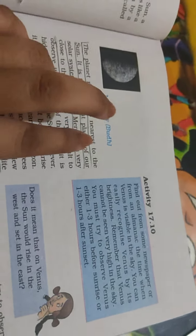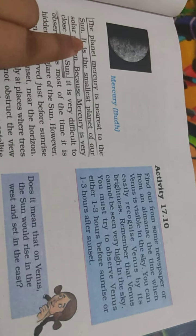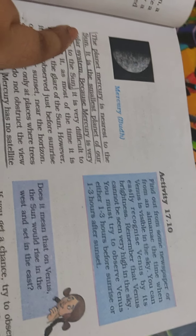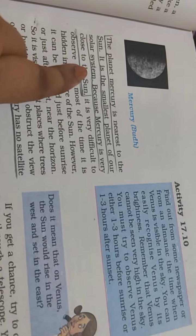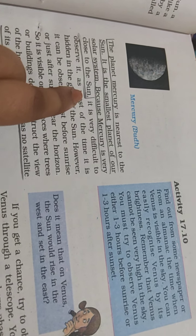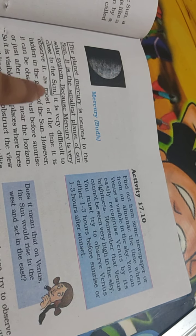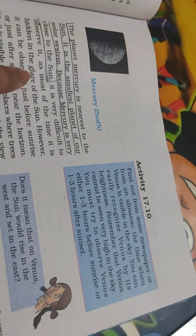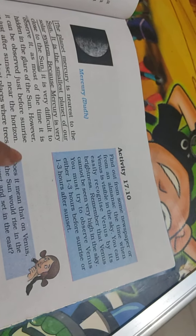The first planet we'll discuss is Mercury. Mercury is nearest to the Sun. It is the smallest planet of our solar system. It is very difficult to observe Mercury because it is hidden in the glare of the Sun most of the time.